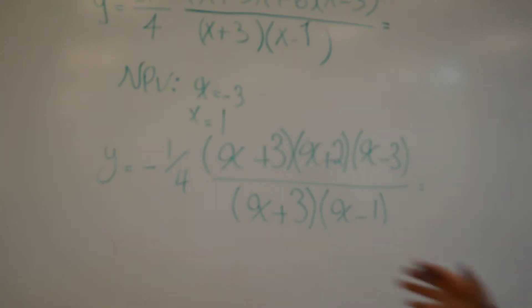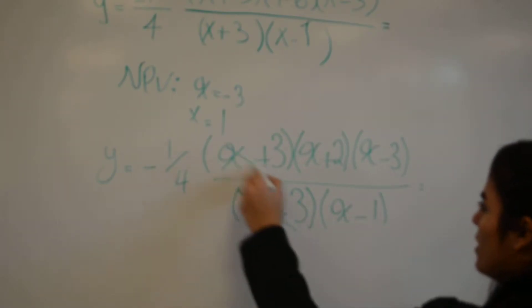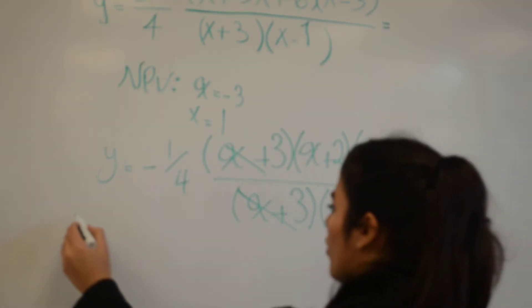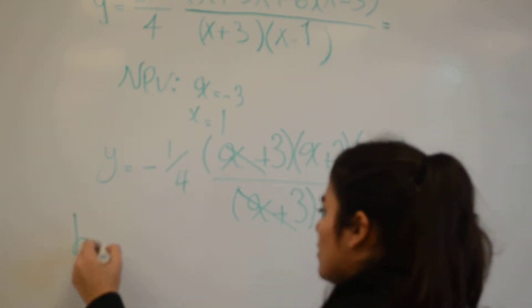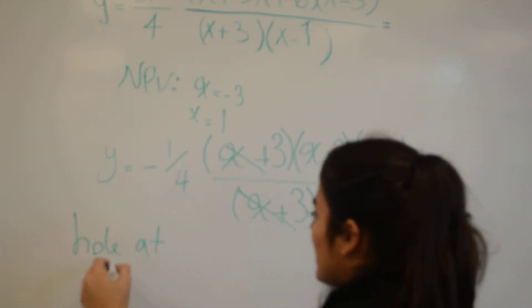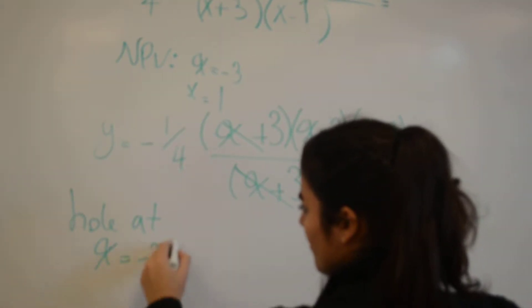We can cancel those out, which will result in our hole. So we'll have a hole at x equals negative 3.